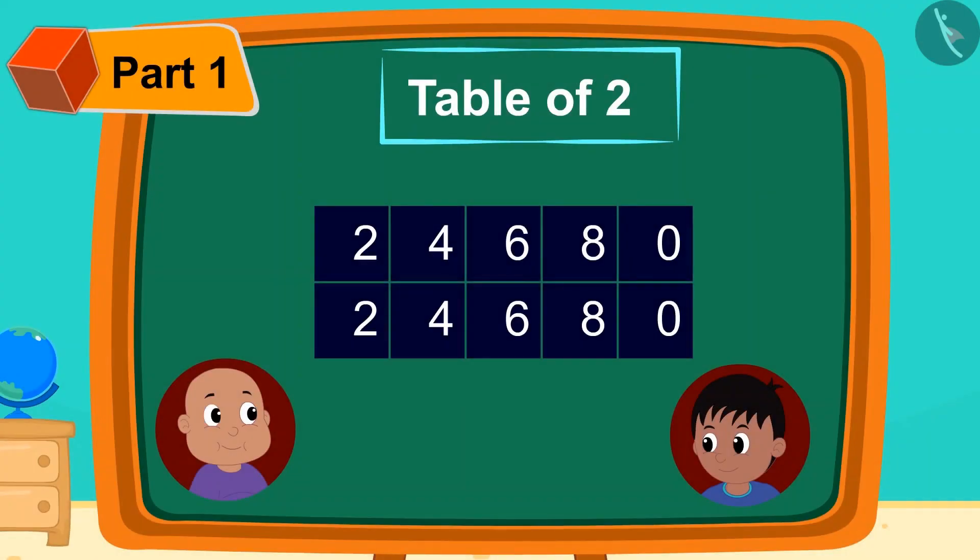Now, he wrote 0 in front of 2, 4, 6, and 8 in 4 cells of the first line. And finally, he wrote 1 in front of 2, 4, 6, and 8 out of the second line.